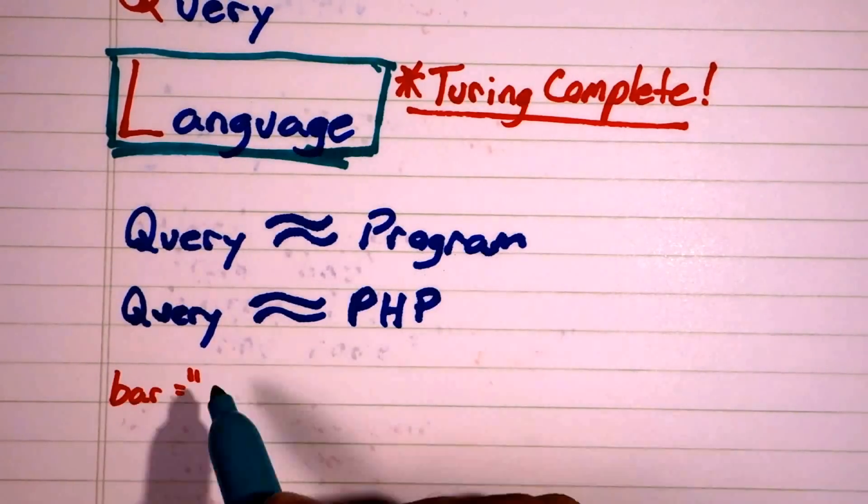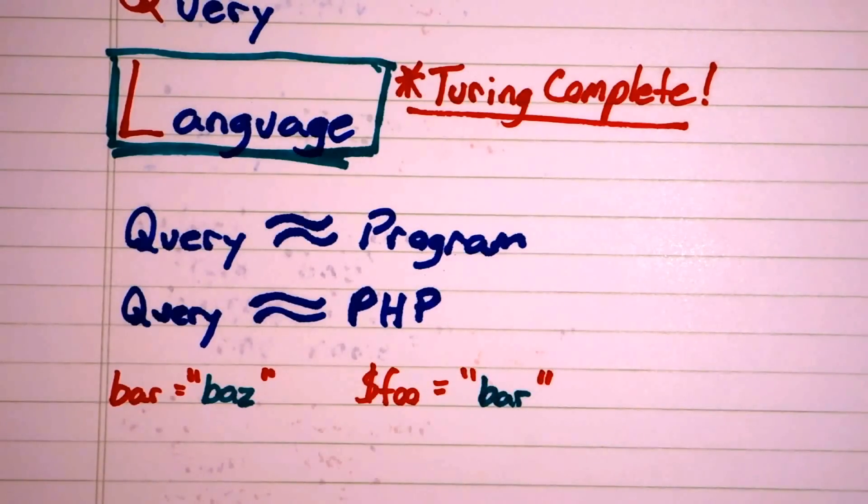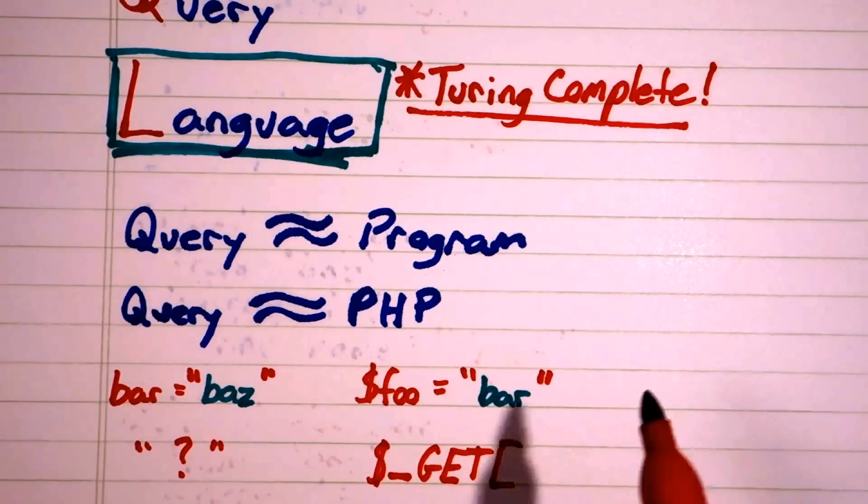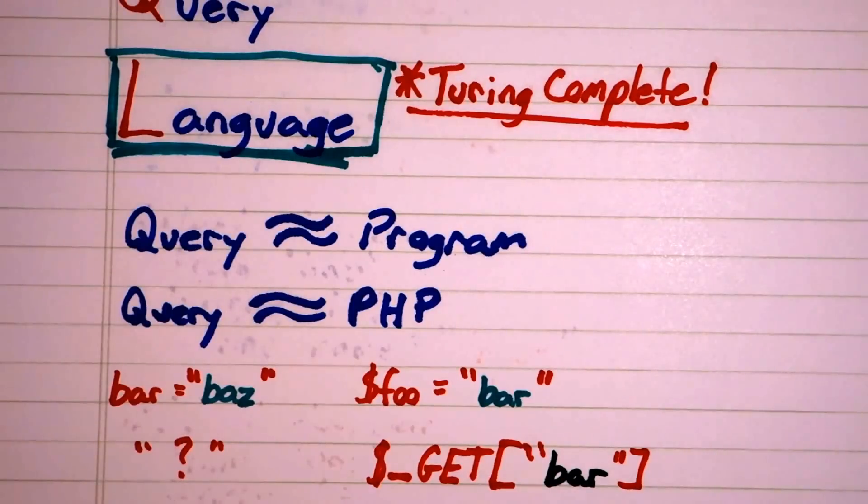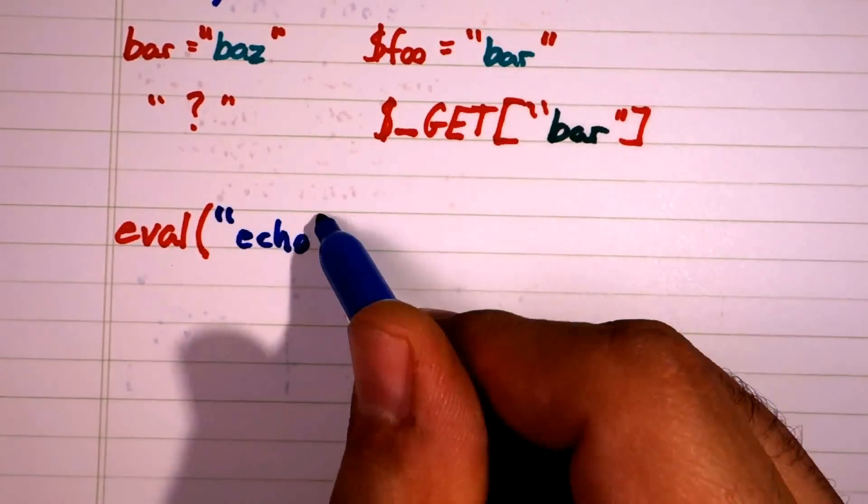In both, we can hard code static values directly into the code and both support a form of variables. So why should we deal with input differently between them?